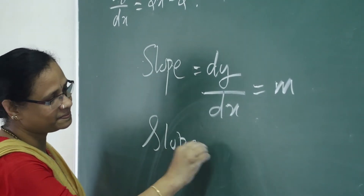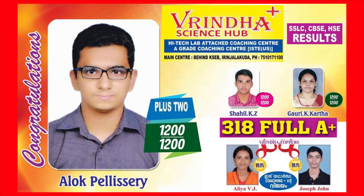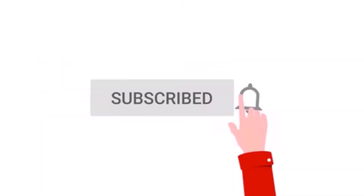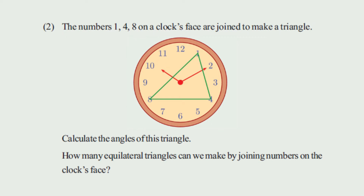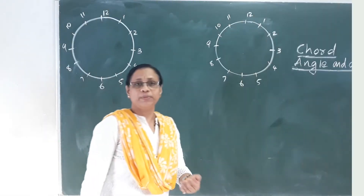Mathematics is an easy subject. Now let's get started. The numbers 1, 4, 8 on a clock's face are joined to make a triangle. Calculate the angles of this triangle. How many equilateral triangles can we make by joining numbers on the clock's face?